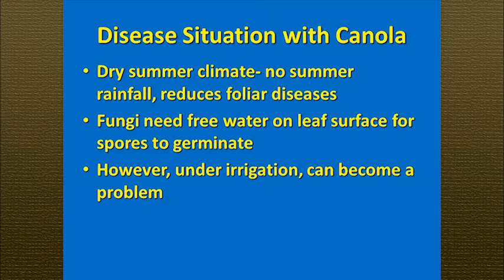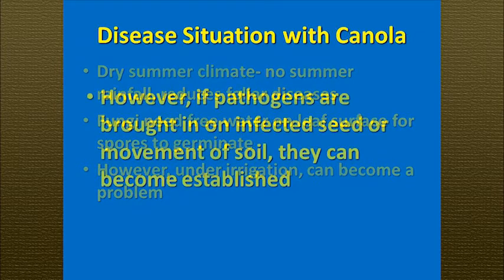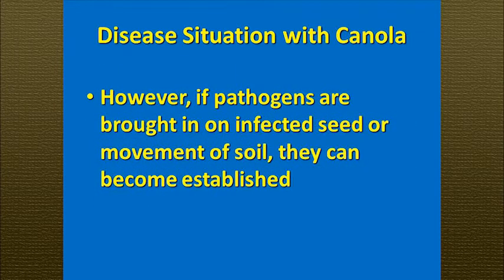A lot of these fungi causing foliar diseases rely on free water on the leaf surface in order for invasion to occur. However, if you're growing canola or other brassicas under irrigation, that can simulate summer rainfall and you could potentially have some problems. We don't really have many pathogens in the area on other crops that could jump over to our brassicas, but there's always the potential that pathogens could be brought in on infected seed or moved in soil, and if that were to happen they could potentially become established in this area.